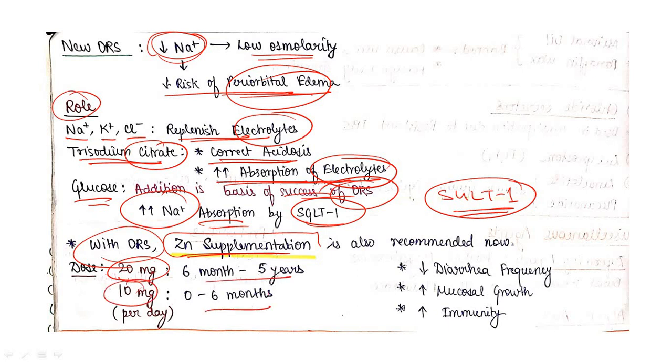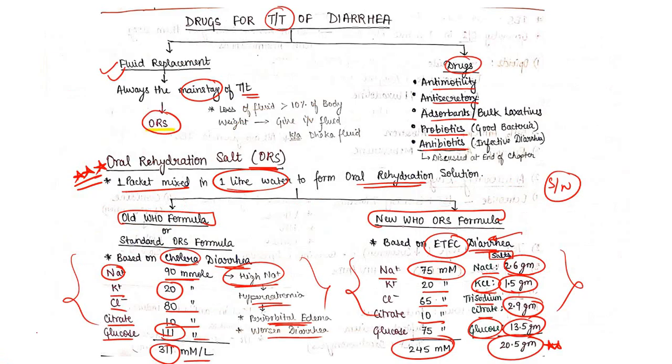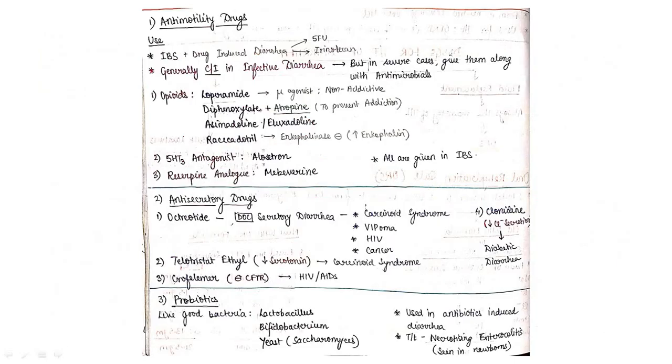Now moving to antimotility drugs. We discussed the first and main stage of treatment - fluid replacement - in which we covered ORS, old WHO formula, new WHO formula, and the role of these components and supplementation. Now coming to the drugs, the second part.